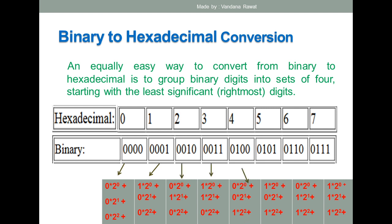You can similarly verify for 2, 3, 4, 5, 6, and 7. For 7: 1×2⁰ + 1×2¹ + 1×2² + 0×2³. That gives 1 + 2 + 4 + 0 = 7. So the binary equivalent 0111 is correct for hexadecimal digit 7.